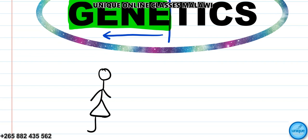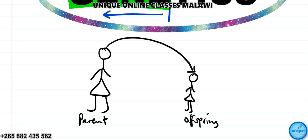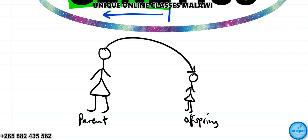Looking at this illustration of a parent and offspring: this parent has transferred traits to the offspring. The parent donated genetic information and the offspring received it. So that is the process of transferring information — characteristics — from parent to offspring.